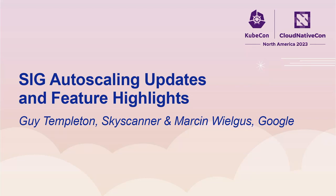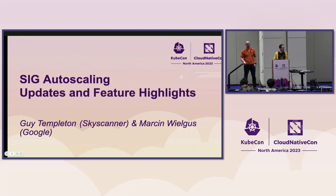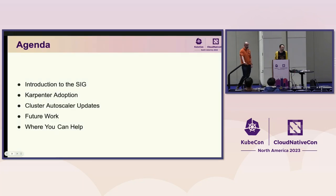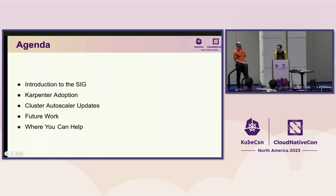Thank you for turning up at nearly half five on the second day of the conference, we appreciate it. We're going to go through some of the SIG auto-scaling updates over the past six months since last KubeCon, as well as some feature highlights of improvement work. We'll give a quick introduction to the SIG, the sub-projects we are responsible for, what they do, the problems they cover. We will cover the adoption of Karpenter, some updates on Cluster Autoscaler, a quick update on VPA, future work that the SIG would like to do, and further areas where you can help.